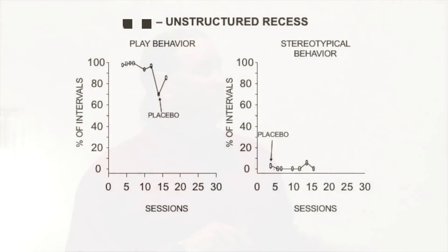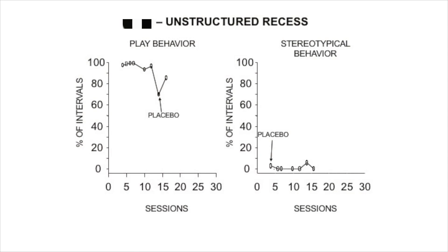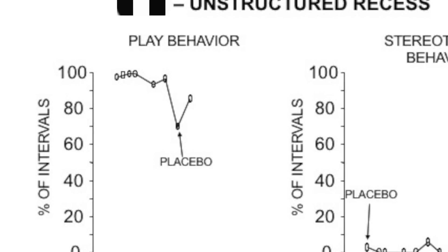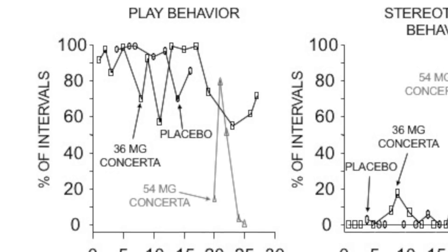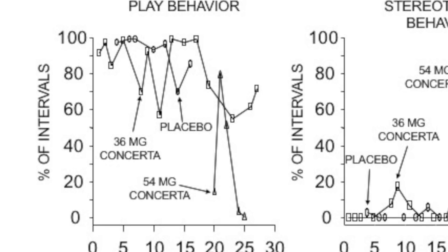During open recess, we had an open quad with a line of students on one end so they didn't run away. On the placebo dose, he was playing the entire time. On the 36 milligram dose of Concerta, he was playing a lot, with stereotypy popping up a little. On the 54 milligram dose, he wasn't playing anymore and was engaging in tons of stereotypy — sitting on the sidewalk, banging a stick and chewing on his fingers till they bled.